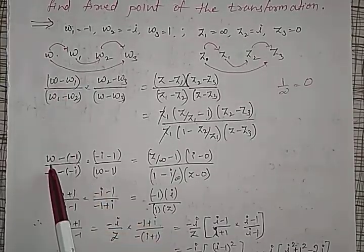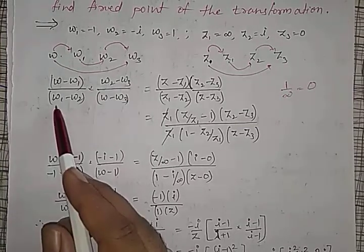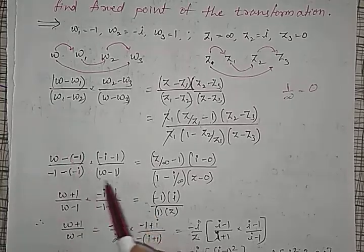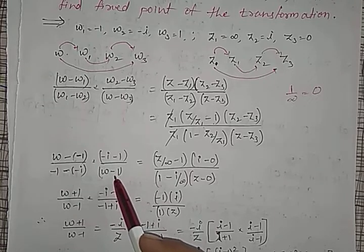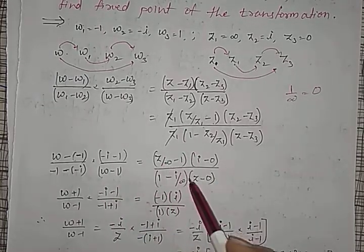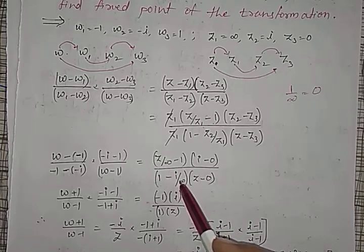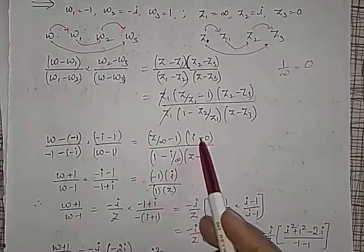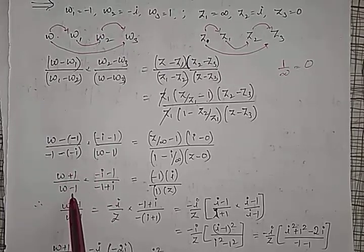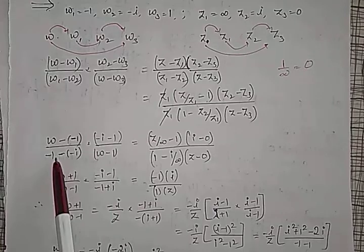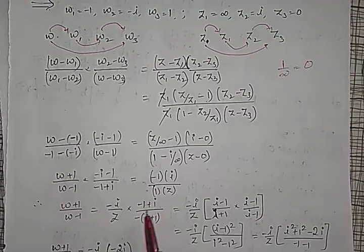After simplification, substituting omega1 = minus 1, omega2 = minus i, and the z values: the left-hand side becomes (omega minus (minus 1))/(( minus 1) minus (minus i)) times ((minus i) minus 1)/(omega minus 1), and the right-hand side reduces to minus 1 divided by 1 times i divided by z, since the infinity terms go to zero. This gives (omega + 1)/(omega minus 1) on the left.